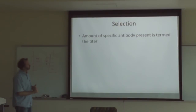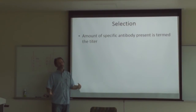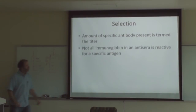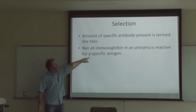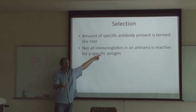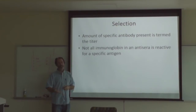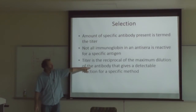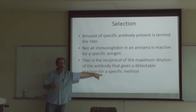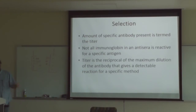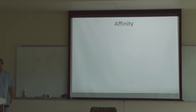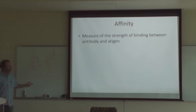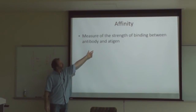The amount of specific antibody present is termed the titer — basically the concentration of antibody. Not all immunoglobulins in antisera are reactive for a specific antigen; there will be other antibodies in there not specific to your antigen. The titer is the reciprocal of the maximum dilution of the antibody that gives a detectable reaction for a specific method. When you buy antibodies, they often tell you to use a 1-to-1000 dilution. Affinity is a measure of the strength of binding between the antibody and the antigen.